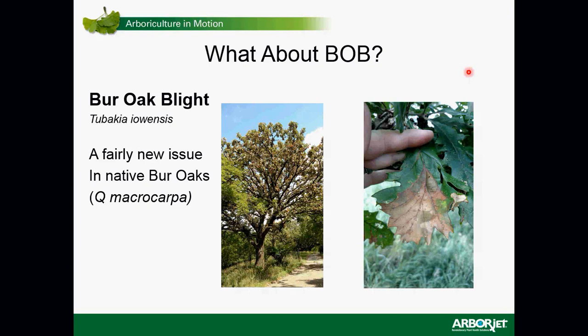Bur oak blight is affectionately called 'Bob.' Bur oak blight is called Tubakia iowensis — it's a leaf spot disease. Tubakia is a common leaf spot disease found on many species of trees. Tubakia dryadea is a common leaf spot fungal issue on oak trees, and for a long time folks thought it was Tubakia dryadea or some other Tubakia fungus until they identified it as its own species and called it Tubakia iowensis.